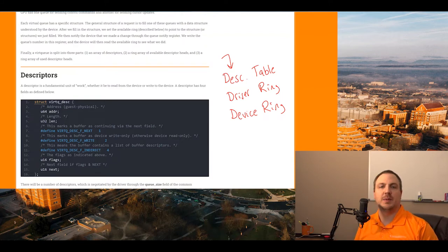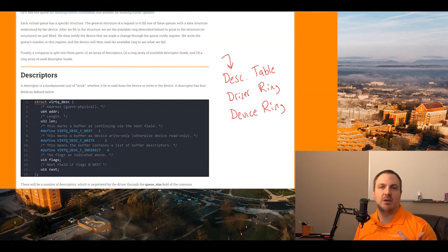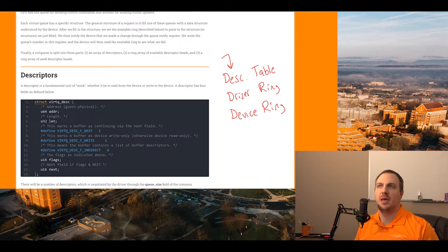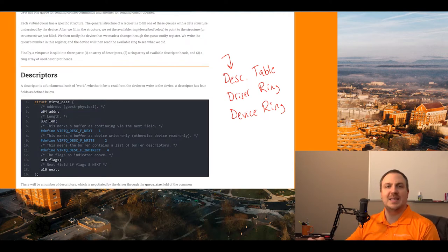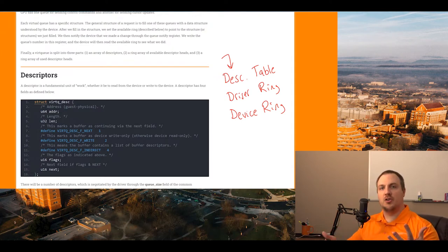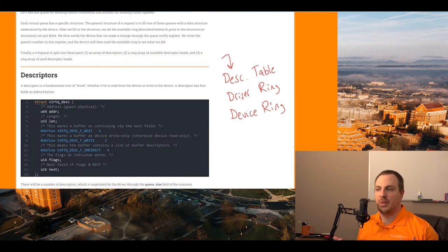The next field is used if we specify the next flag. For most purposes we're only using two fields — address and length. When we get to the block device, we actually have to use three descriptors in a chain, and we chain those by using next, which points to the next portion of the chain. The descriptor table is where the actual data is — it's an address and a length — and when passed to the device, it will find that data and do something with it.